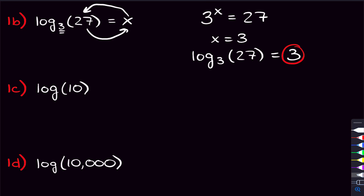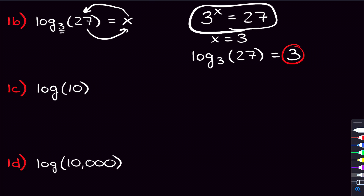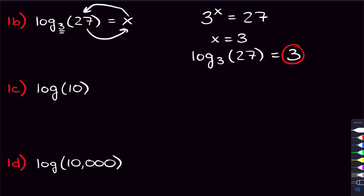You might wonder why we don't just write the equation directly instead of using log notation. There are many reasons we use logs. One basic reason: if the problem were messier and we couldn't solve it easily, we'd want to plug it into a calculator. We can't do that in exponential form, but if we write x equals log base 3 of 27, that's something we can enter into a calculator.